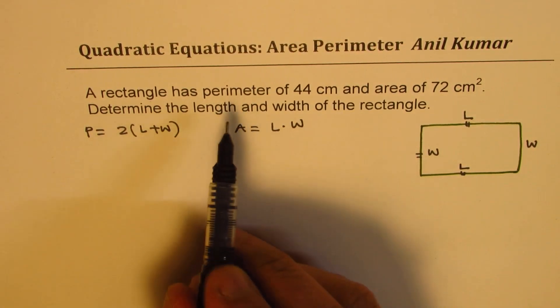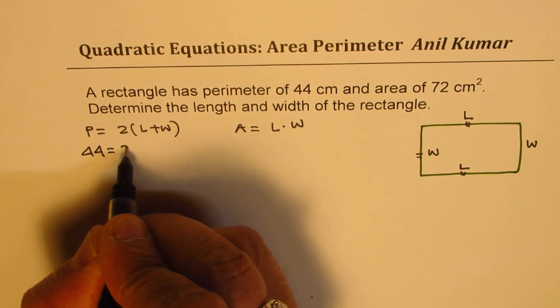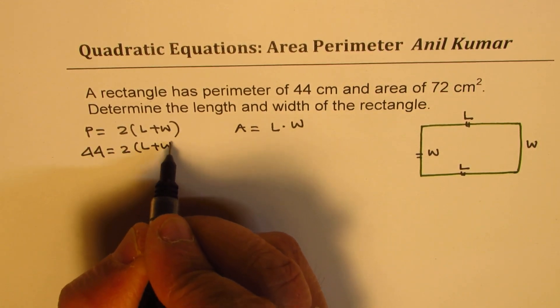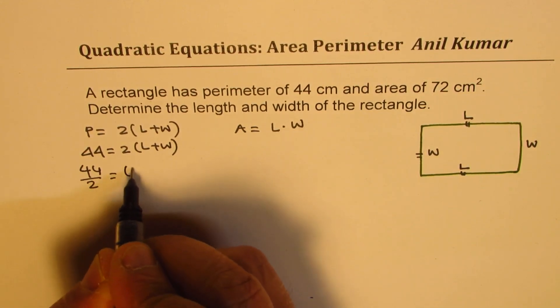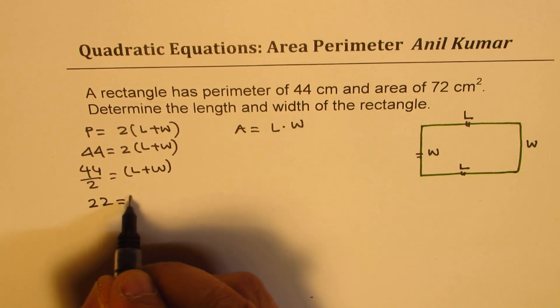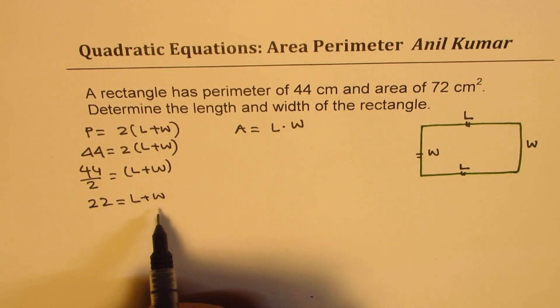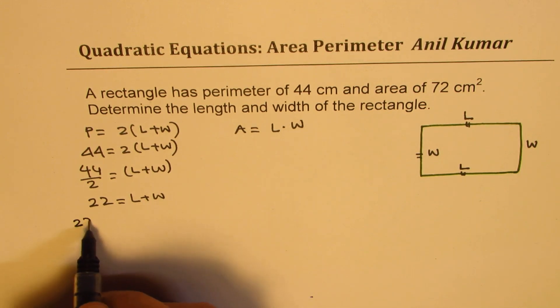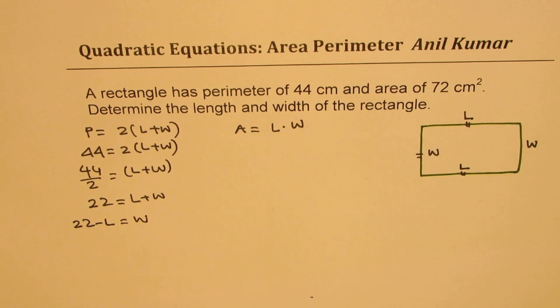From these defined variables, when we see perimeter is 44, we could write this as 44 equals 2 times length plus width, or 44 divided by 2 is length plus width, which is 22. So 22 equals L plus W. Now we can isolate and write width in terms of length, so we can say 22 minus L equals W. So that way we get one equation.